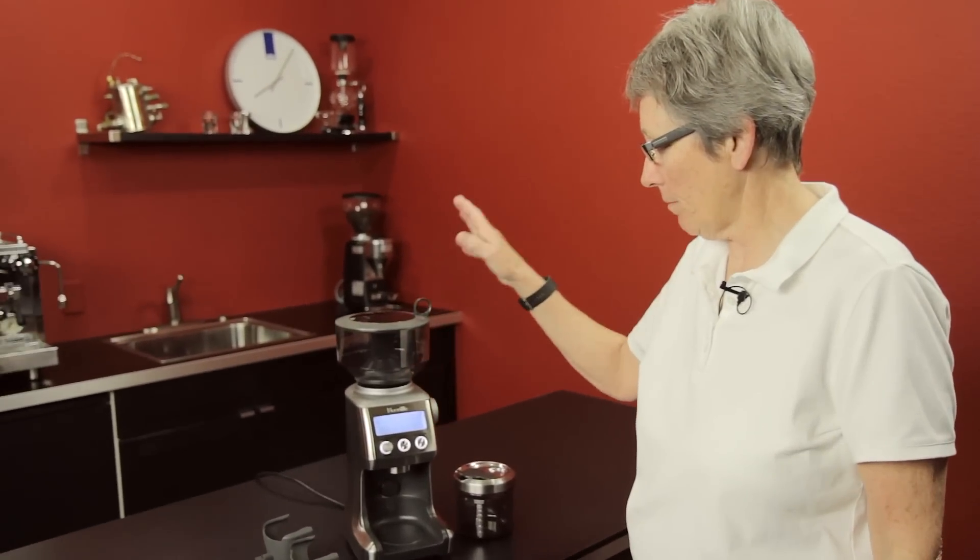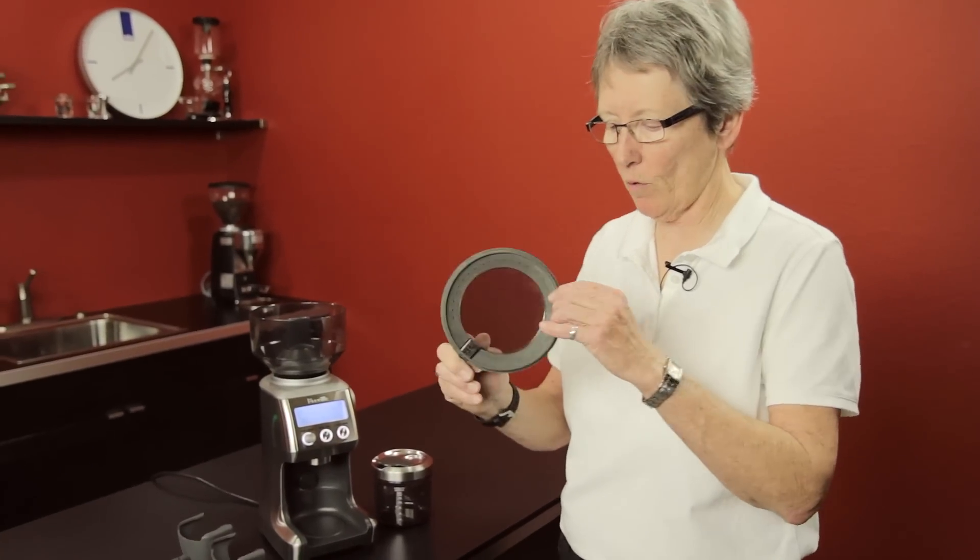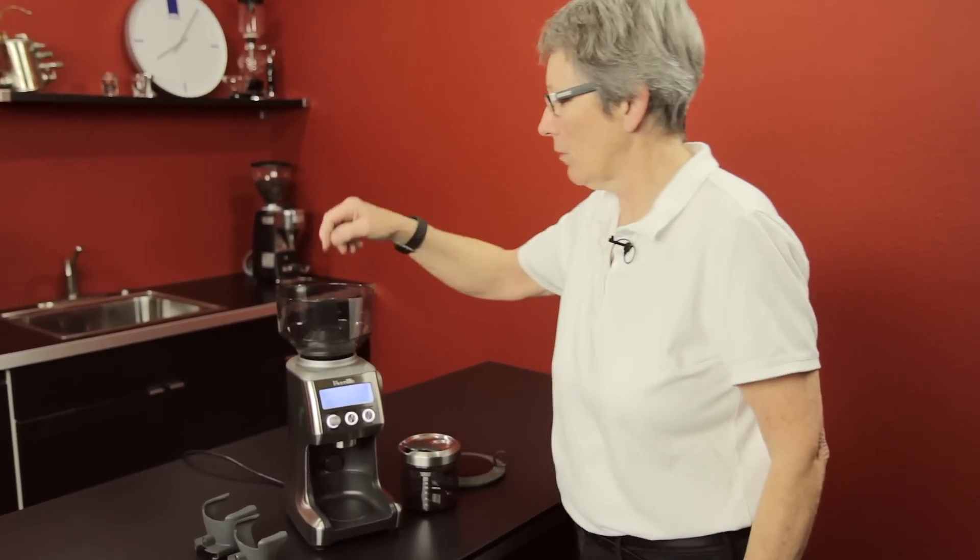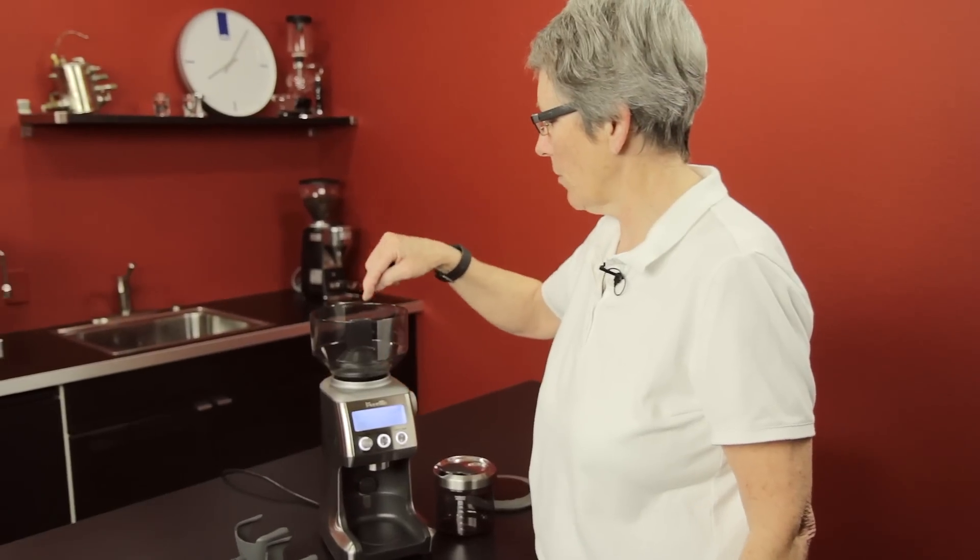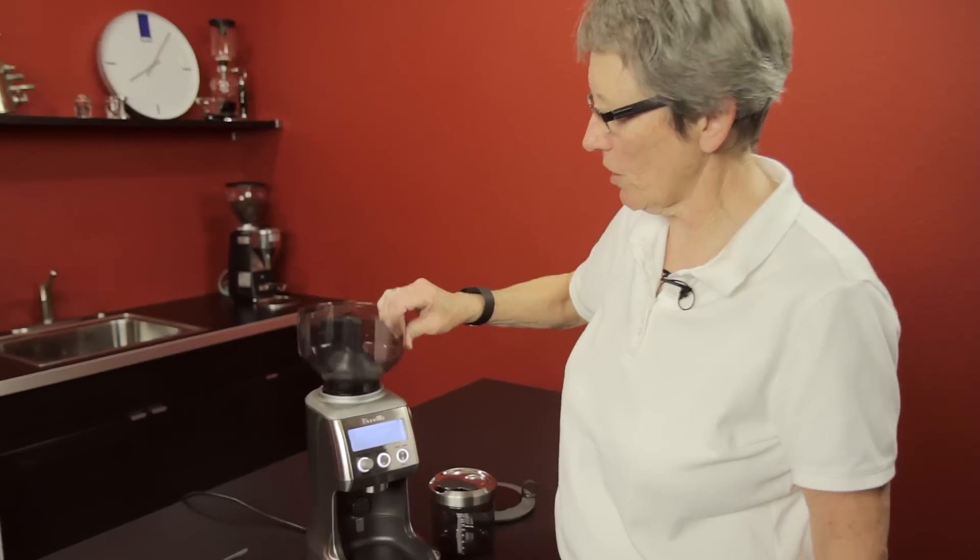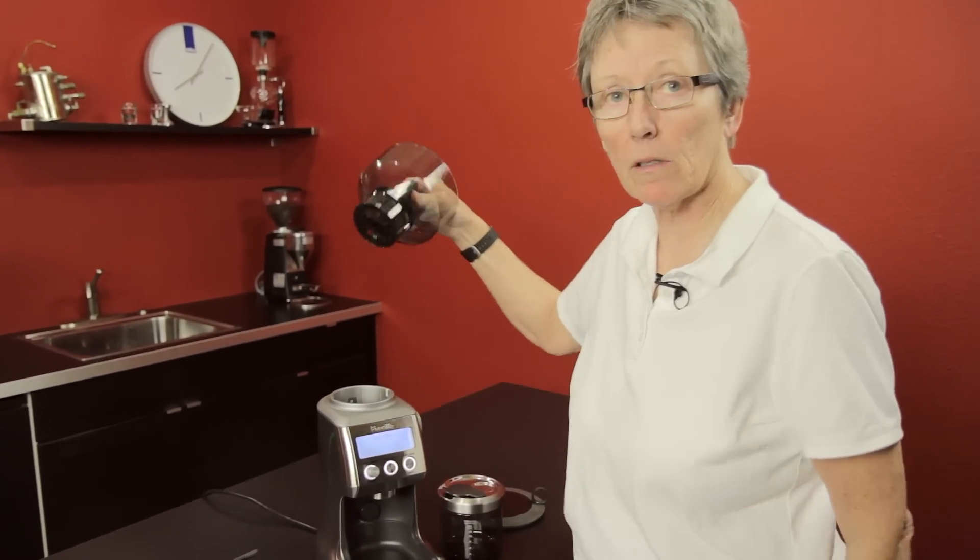Same basics on it, one pound bean hopper with a rubber gasket on here on the lid that keeps it airtight. The bean hopper is also removable, and when you go like this, it actually shuts off the flow of beans down here so that you can change the beans out.